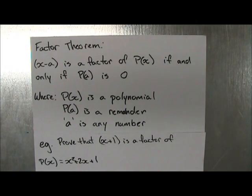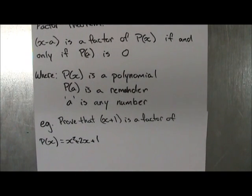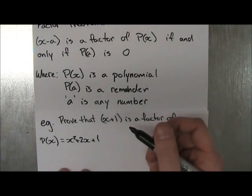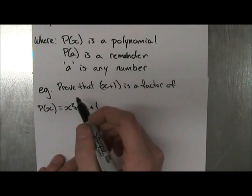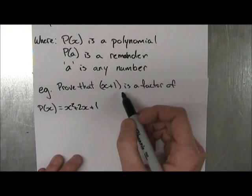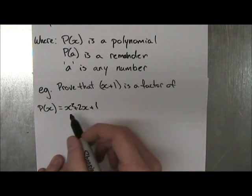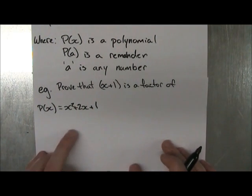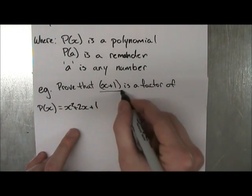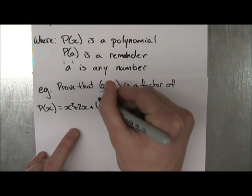Alright, so that's pretty straightforward, but I'll use an example to help better explain what they're talking about. So our first example says prove that x plus 1 is the factor of P(x) equals x squared plus 2x plus 1. Okay, so how can we prove that this is the factor of this polynomial here?